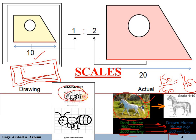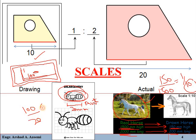Similarly, if we have to draw the sketch of an ant, we cannot draw it at actual dimension because it will be very small and difficult to visualize. So for example, if the actual dimension of the ant is 20 mm and we draw it as 100 mm instead, it means we have drawn 100 mm in place of 20 mm. So the ratio is 5 to 1, meaning the drawing is 5 times greater than the actual object.